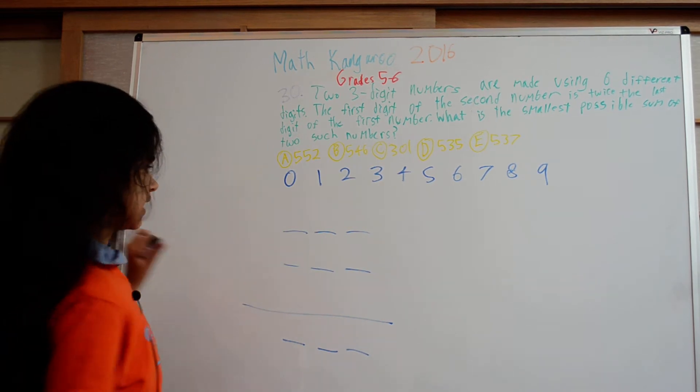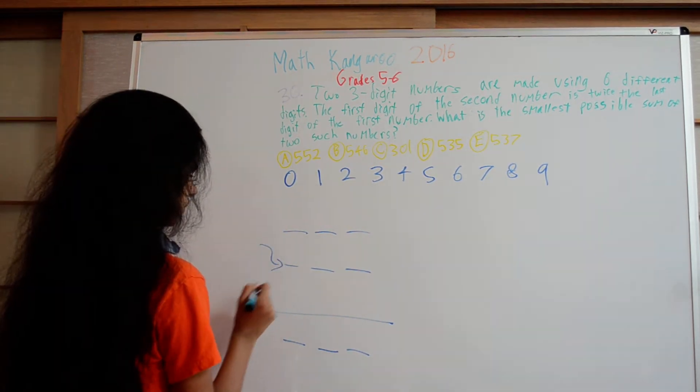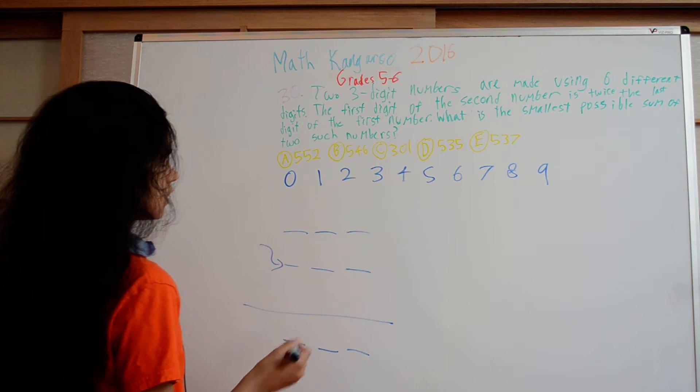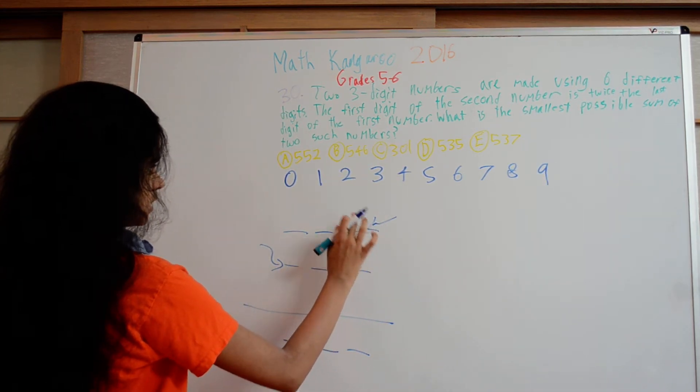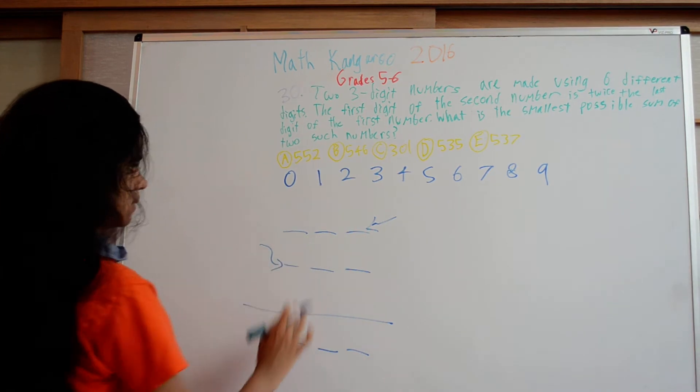We know the first digit of the second number, this number here, is twice the last digit of the first number. So this number is two times whatever goes there.